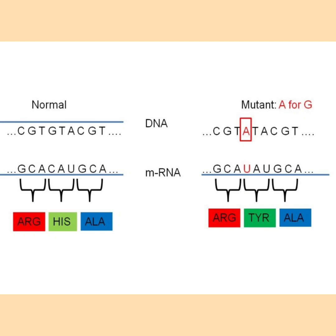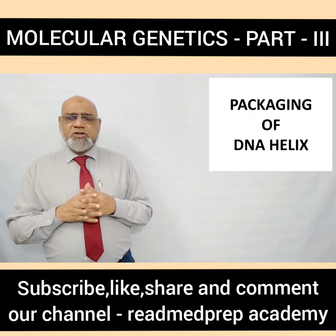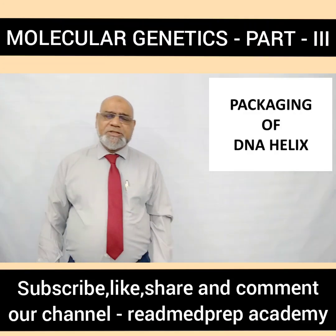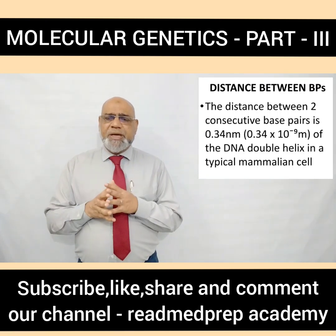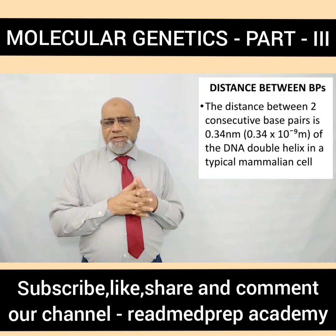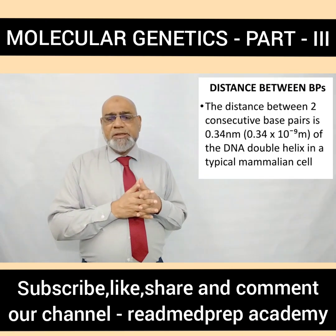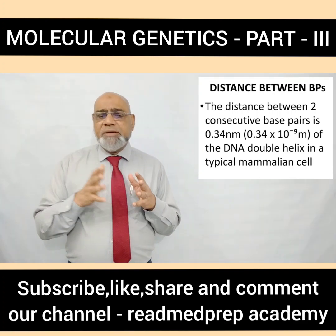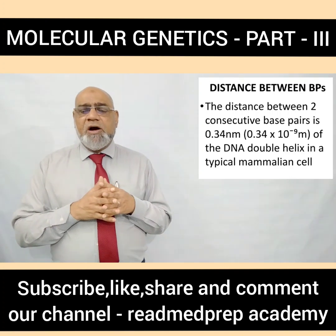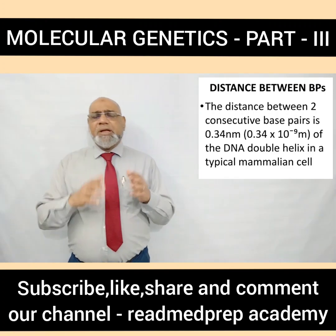Because of the mutation, instead of histidine, there is tyrosine. So the amino acid polypeptide will have arginine, tyrosine and alanine, resulting in the formation of an altered protein. Now let us move on to the packaging of the DNA helix. The distance between two consecutive base pairs is 0.34 nanometers, that is 0.34 × 10⁻⁹ meters, in the DNA double helix of a typical mammalian cell.